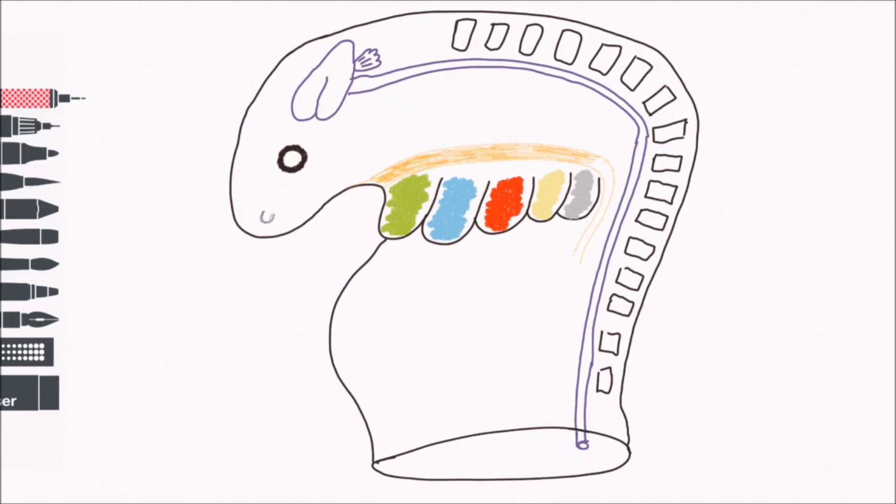The thyroid diverticulum descends through the neck, but it remains connected to the pharynx via the thyroglossal trunk. The duct fuses with the ventral portion of the fourth pharyngeal pouch, which we discussed in the previous video. This provides the parafollicular cells for the thyroid.